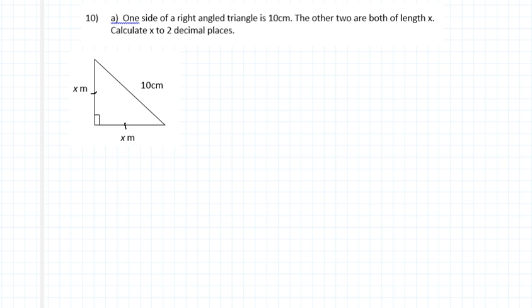We know that the Pythagorean theorem says that a squared plus b squared equals c squared. And if we label the sides of the triangle, we end up with side a, side b, and side c. And because we've got the hypotenuse, we can substitute the values of x into our equation for a and b.